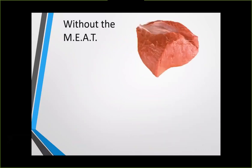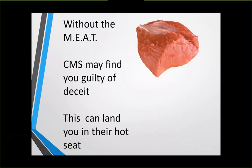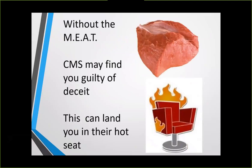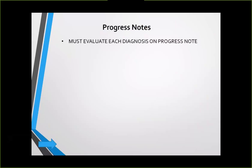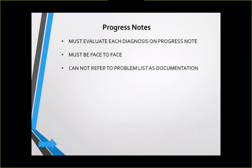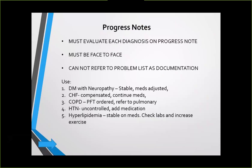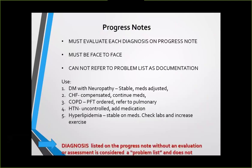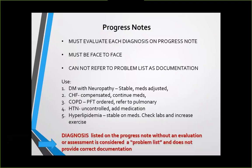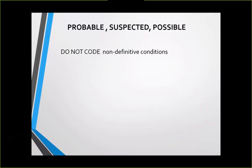Without the MEAT, CMS can find you guilty of deceit — and this can land you in their hot seat. There are real audits on these charts. On your progress notes, you must evaluate each diagnosis; it has to be face-to-face and you cannot refer to a problem list as documentation. Diagnoses listed without an evaluation or assessment are considered a problem list and do not provide correct documentation. Also, probable, suspected, and possible diagnoses do not code — non-definitive conditions don't generate a RAF.